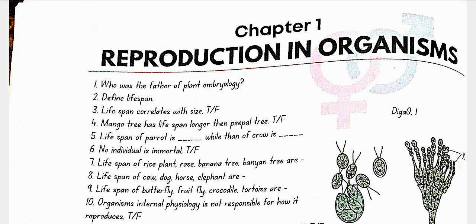No individual is immortal — false. Unicellular organisms are immortal. Lifespan of rice plant is 3 to 4 months, rose is 5 to 7 years, banana tree is 25 years, and banyan tree is 200 years.